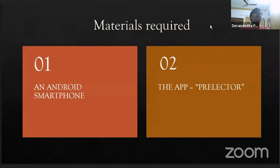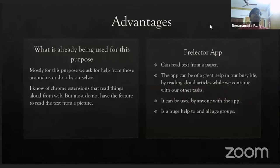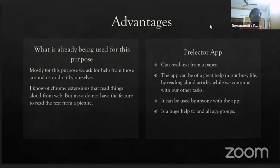The materials required are an Android smartphone and the Prelector app. Currently, what people use for this purpose is asking for help from those around them or doing it themselves. Some extensions read things aloud from the web, but most don't have the ability to read text from a picture. The advantage of the Prelector app is that it can read text from a paper, it can be used on mobile phones, and it can help in our busy lives by reading aloud articles while we continue other tasks. It can be used by anyone of any age group.